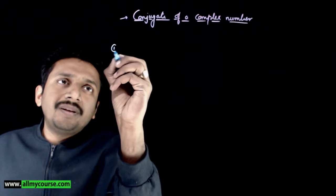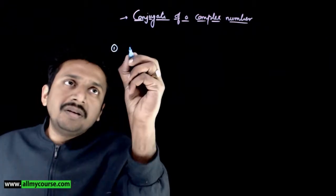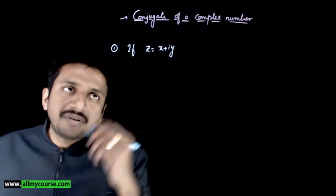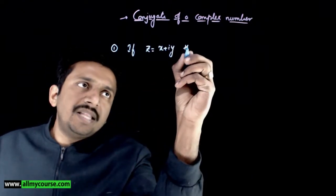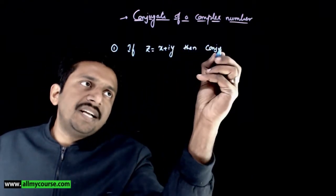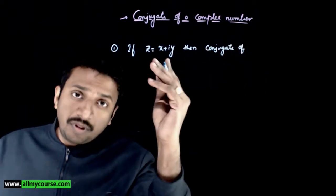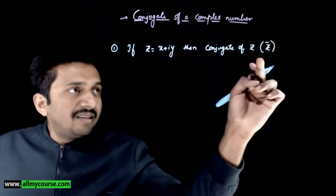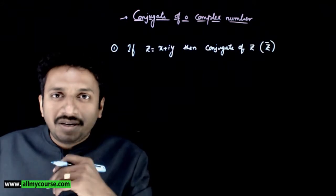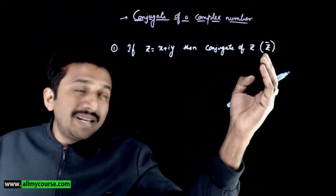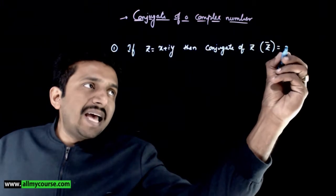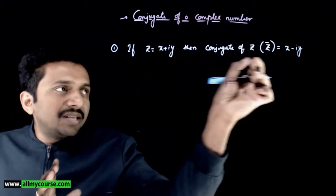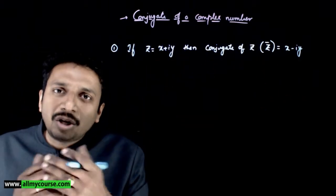First, what is a conjugate of a complex number? If z is equal to x plus iy is a complex number, then the conjugate of z, denoted by z bar (a dash above z), is defined as x minus iy. So if x plus iy is a complex number, then x minus iy is the conjugate of that complex number.